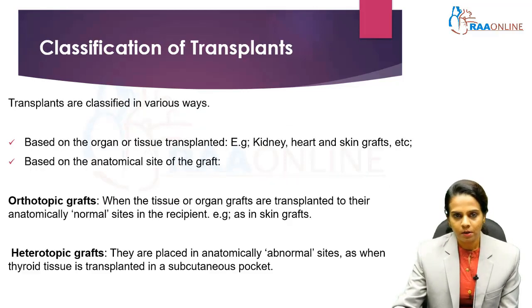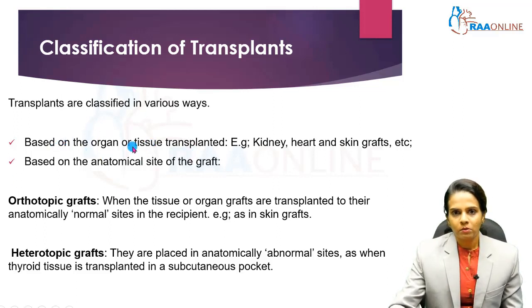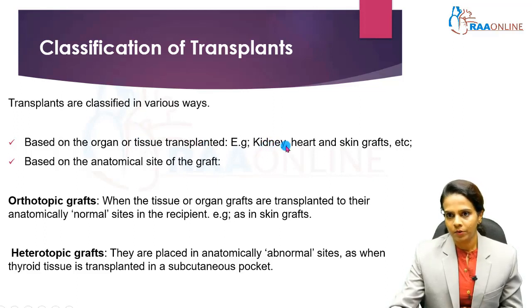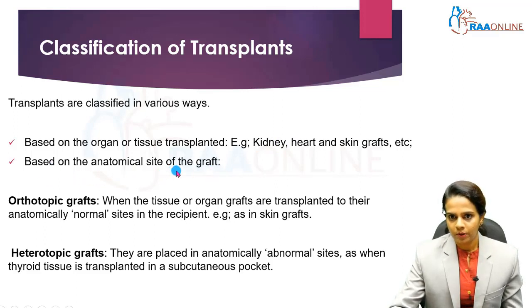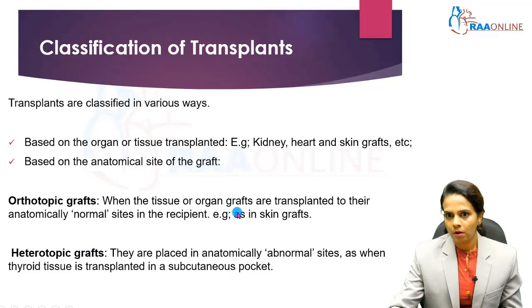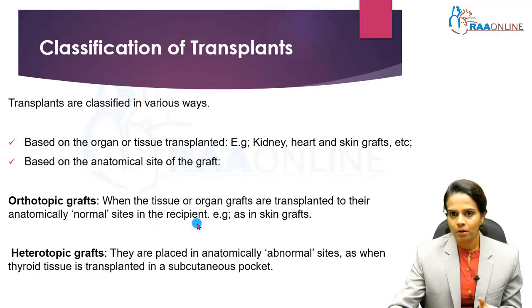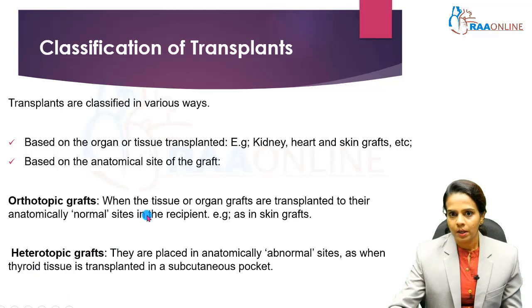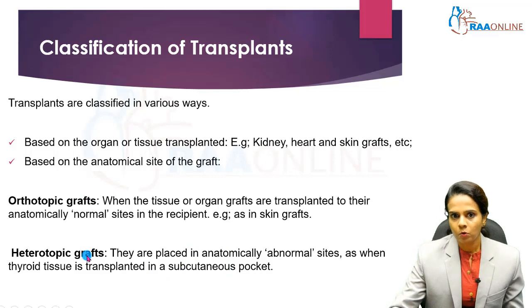Coming to the classification of transplants: first, based on organ or tissue transplanted — examples include kidney graft, heart graft, and skin graft. Next, based on anatomical site, grafts are classified as orthotopic or heterotopic. Orthotopic grafts are transplanted to their anatomically normal sites, as in skin graft. Heterotopic grafts are transplanted to anatomically abnormal sites, such as when thyroid tissue is transplanted into a subcutaneous pocket.